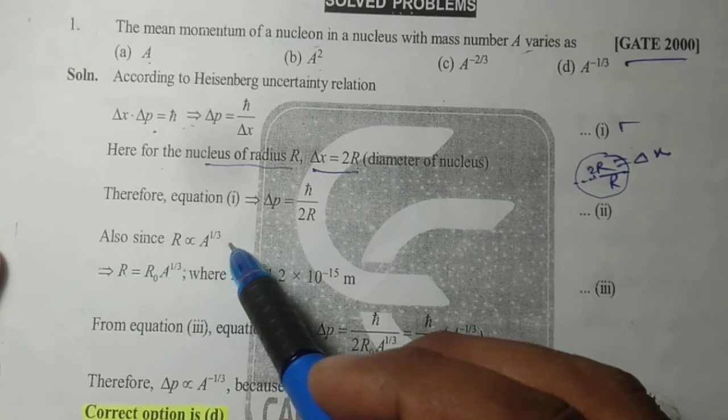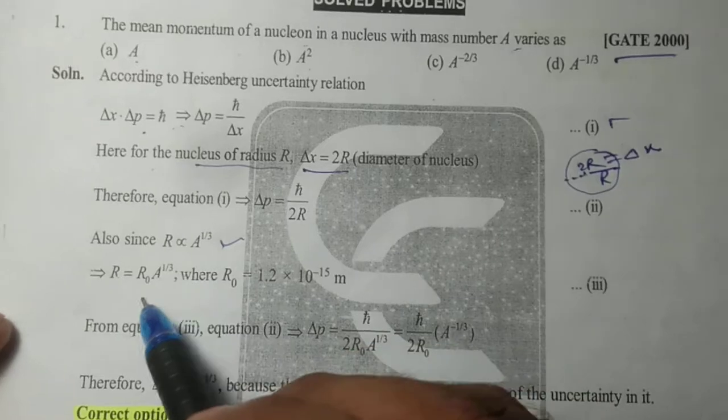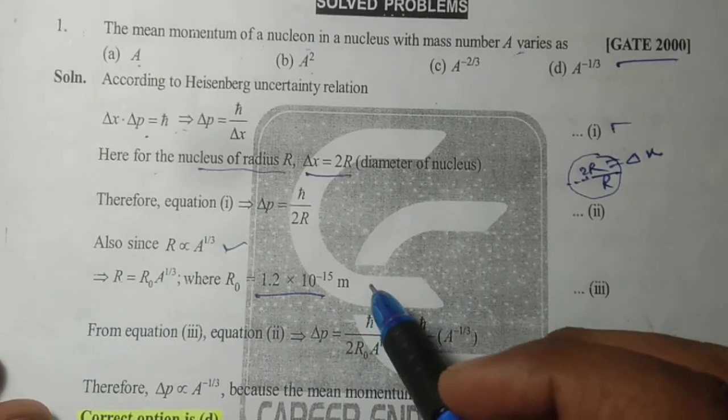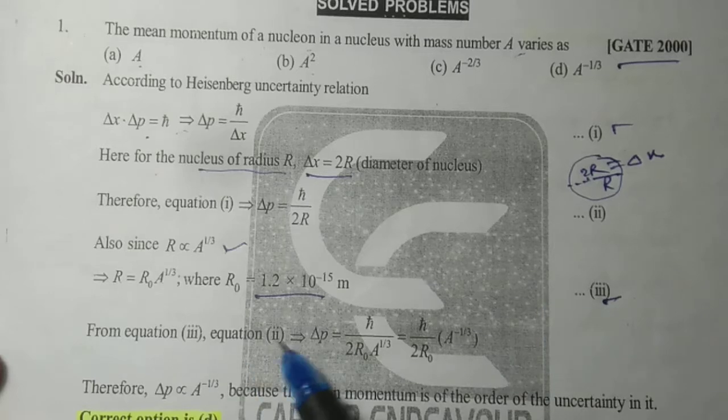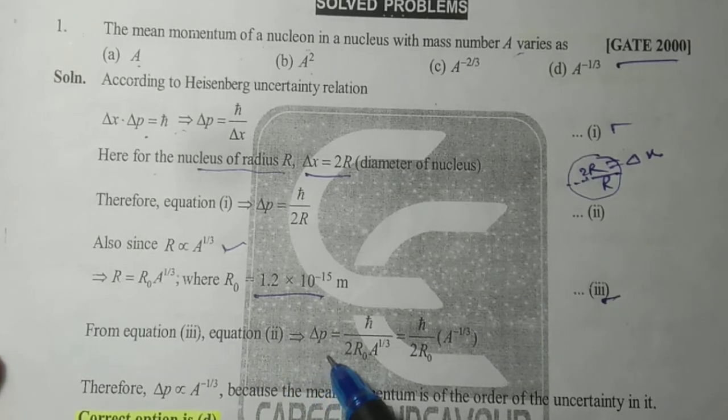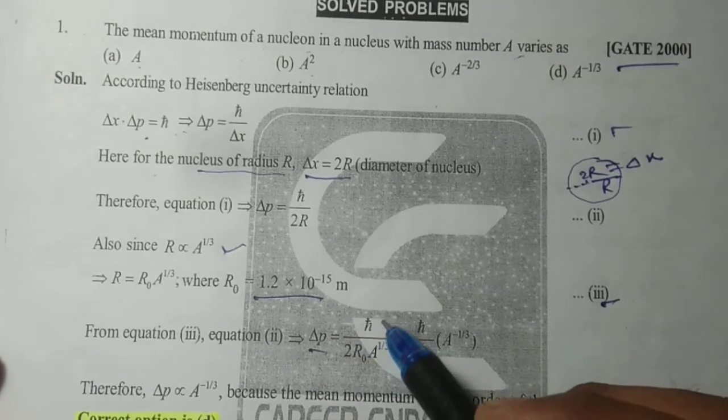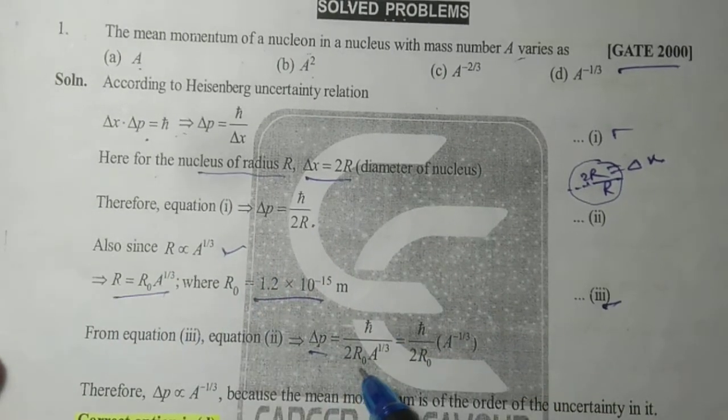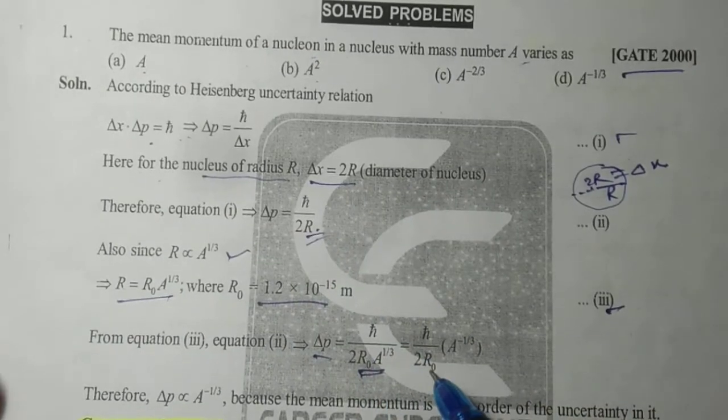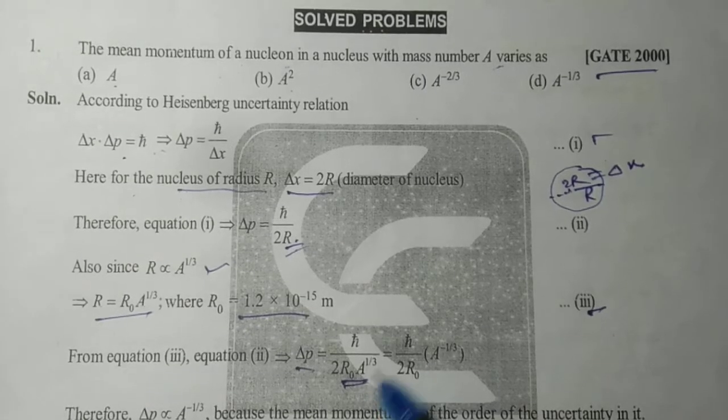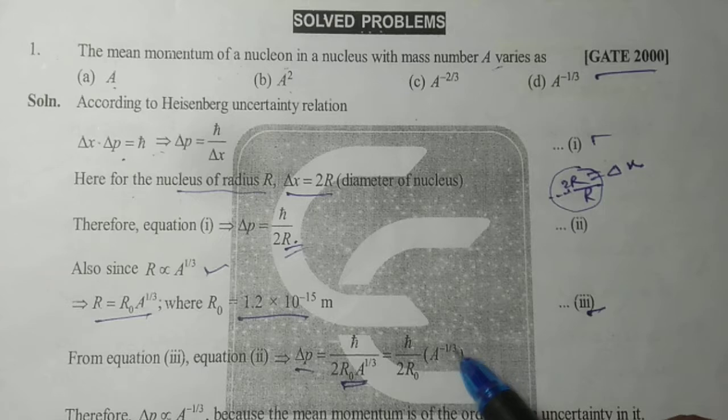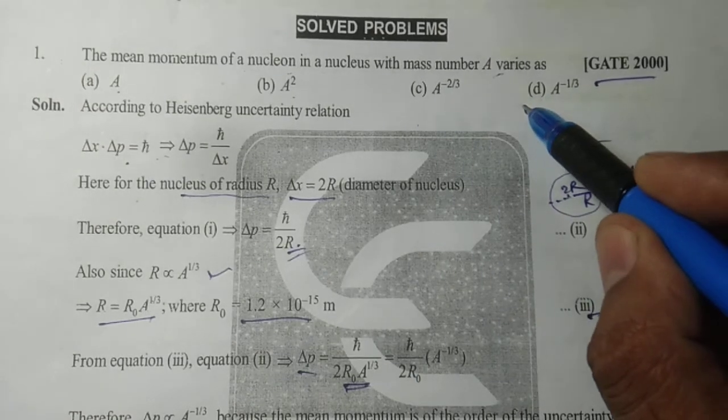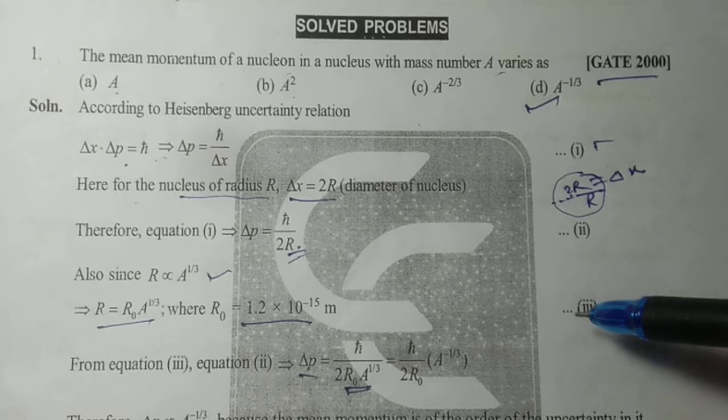Also, since R is proportional to A to the power one-third, this is the basic property of nucleus. From this relation, R equals R naught A to the power one-third, where R naught is 1.2 times 10 to the power minus 15 meters. From this relation and using equation two, delta p equals h bar upon 2R naught A to the power one-third. This clearly shows that delta p is proportional to A to the power minus one-third. So the correct option is D.